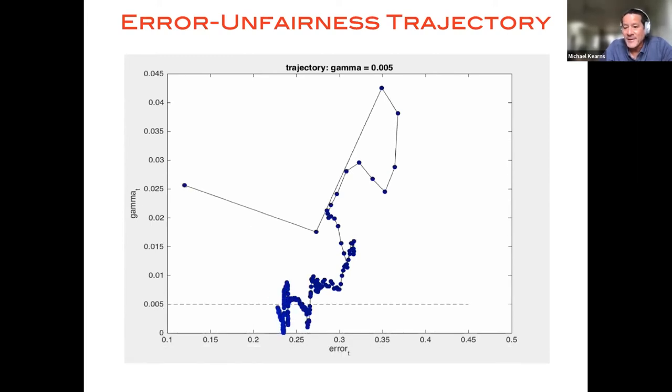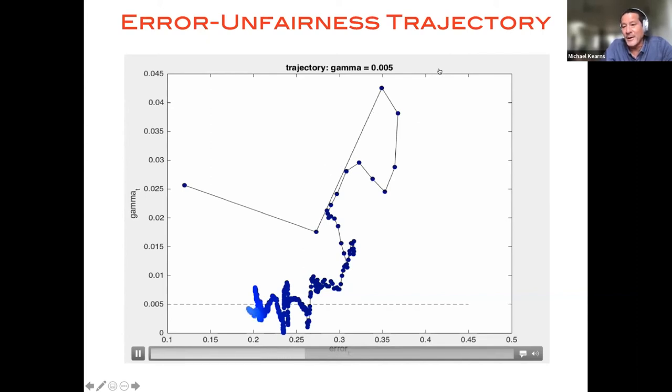The action starts off with a model that has rather low error and high unfairness, as you would expect, and it goes on some crazy trajectory for a while. For instance, over here, both error and unfairness are getting worse. Okay,